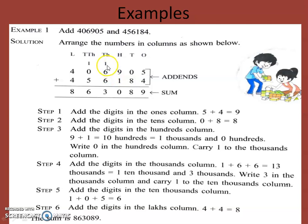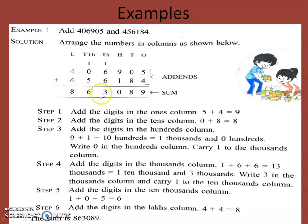Then one plus six plus six gives thirteen. We write three and carry one. Then one plus zero plus five gives six. Then four plus four gives eight. So this is our sum — this is our solution after adding these two numbers.